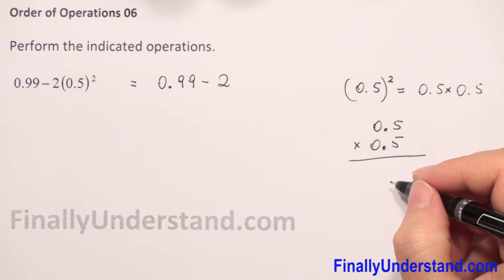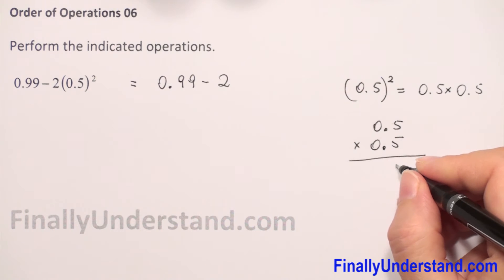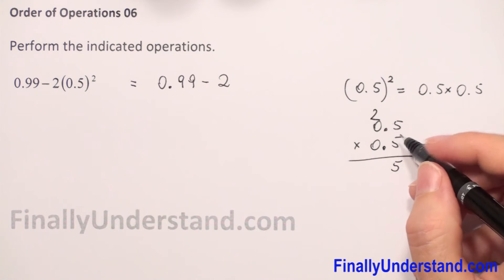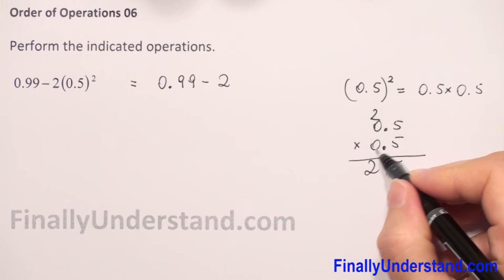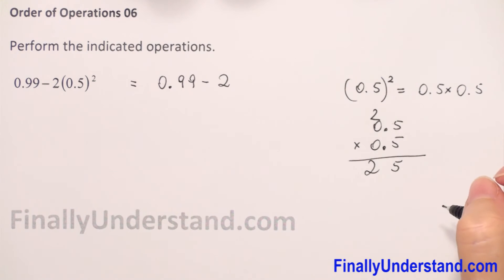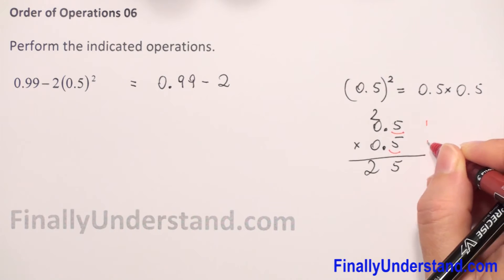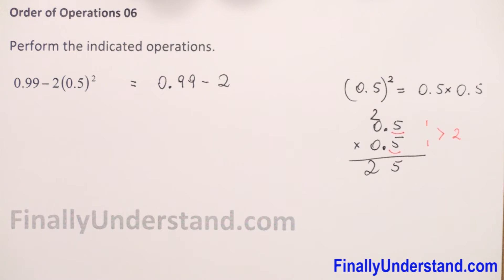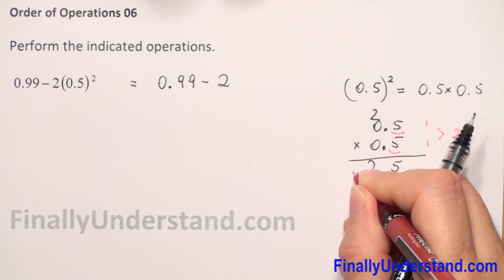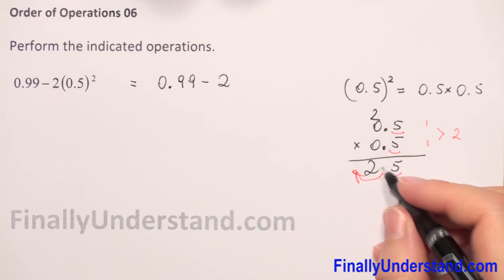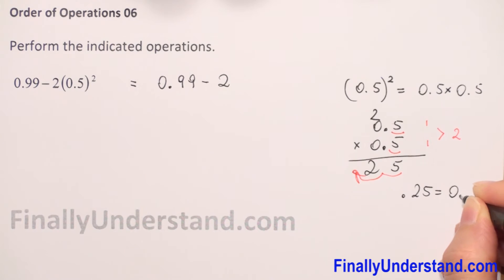To multiply 0.5 times 0.5, first we forget about decimal points and multiply like whole numbers. 5 times 5 is 25, so we write 5 and carry 2. 5 times 0 is 0 plus 2 is 2. Then we count decimal places: 1 in the first number and 1 in the second, so 1 plus 1 is 2. We count two places from right to left, giving us 0.25.